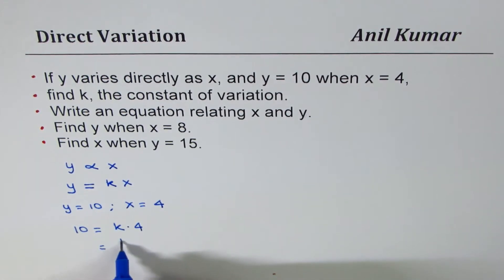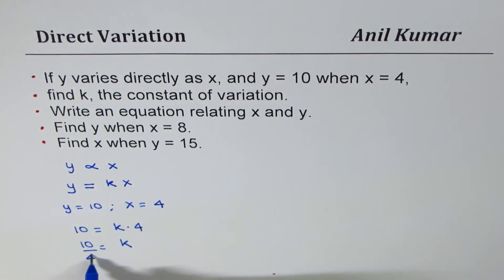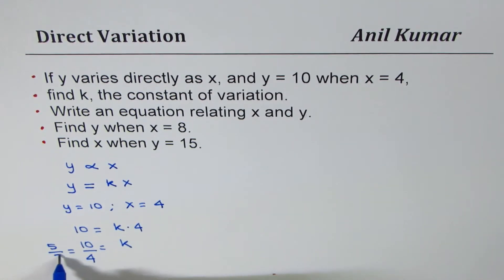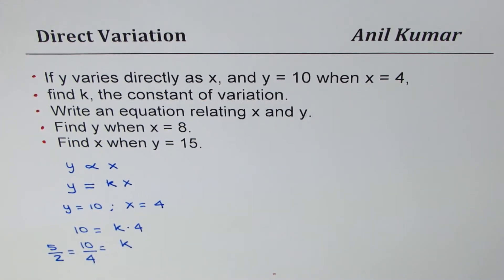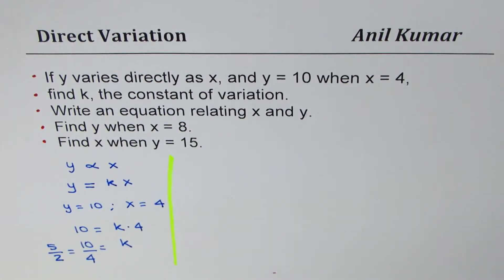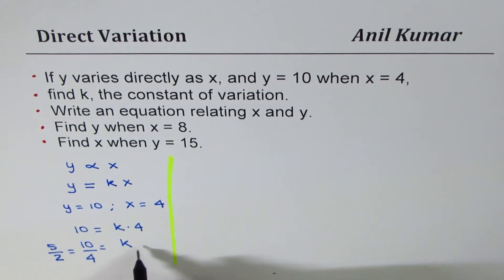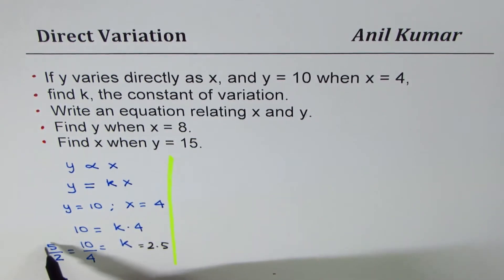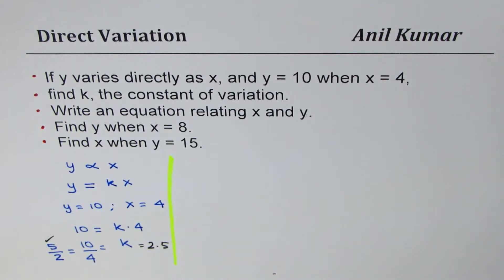We can divide both sides by 4, so we get k equals 10 divided by 4. This can be simplified by dividing both by 2, giving us 5 over 2. We prefer to keep them in fractions. If you were dividing by 3, decimals would give you an approximation. We have found the value of k to be 5 over 2. You could also write this as 2.5 in decimals, but we prefer to use fractions.